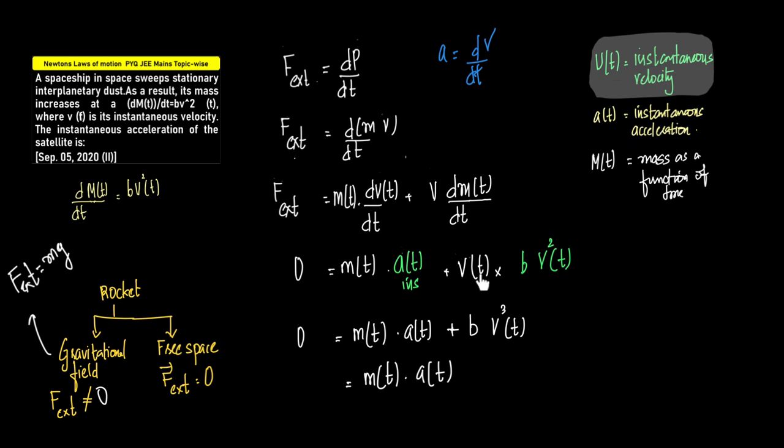Plus, instead of v, we'll add v of t, because it is given that velocity is a function of time. And what is dm by dt? This is where we come back to the question. So dm by dt is actually given to us as b into v square, which is actually b into v square of t.